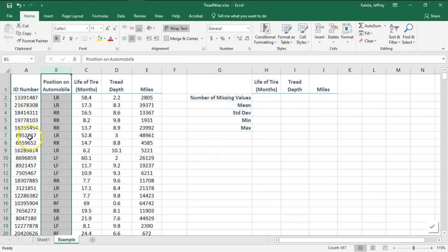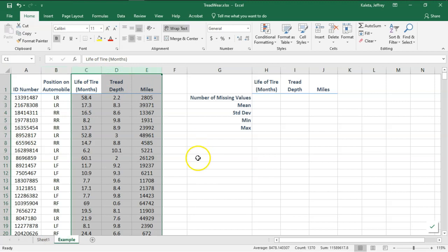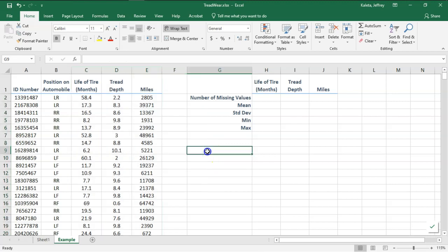If you look at position on the automobile, there's no way that we can impute the data if it's missing. The only thing that we could hope for is that maybe there's a value like R-R-R that would be an error that might be something we're going to correct. But we'll look at values that are numerical so we can estimate what we might have for replacements.